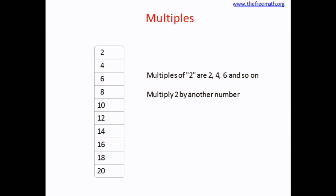For example, if you multiply 2 by 3, you get 6 which is a multiple of 2. If you multiply 2 by 5, you get 10, which is also a multiple of 2. That means you multiply 2 by any other number to get a multiple of 2.